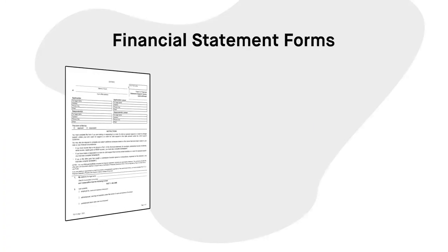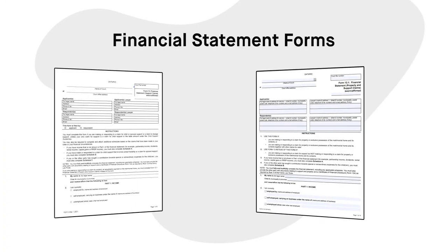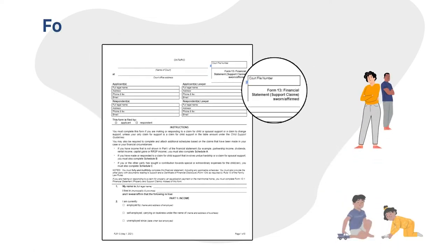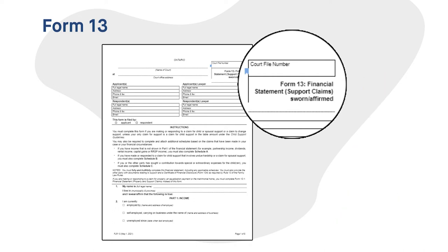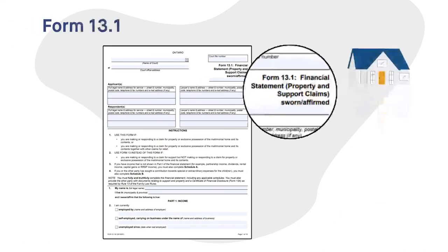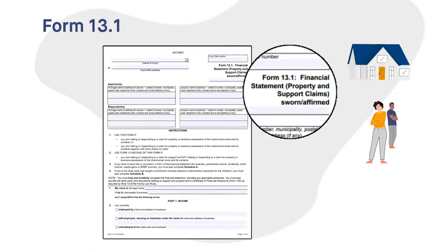There are two financial statement forms used in family court. Use Form 13 if your issues are only about child or spousal support. If your issues are only about property, or are about property and support, use Form 13.1.